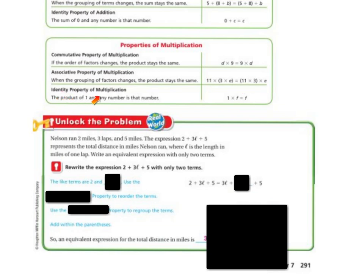The identity property of multiplication states that the product of 1 and any number is that same number. In addition it was 0, but in multiplication it's 1, because 1 times any number is itself.